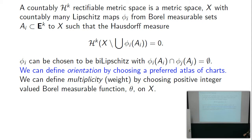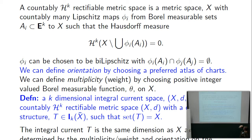Everything before orientation and multiplicity was already studied by many people in the context of differentiability in metric spaces. The only new things are the orientation and the multiplicity. We need orientation and multiplicity because without them we can't have a notion of boundary. We need multiplicity because things double up in the limit.